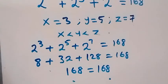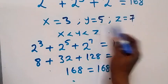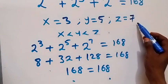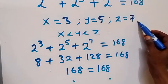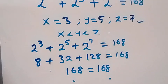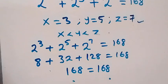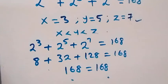We conclude that x equals 3, y equals 5, and z equals 7 satisfy the given problem. Thank you for watching — don't forget to subscribe for more exciting videos, turn on the notification bell, share this video, give it a thumbs up, and put your comment in the comment section. Thank you, see you next class, bye for now.